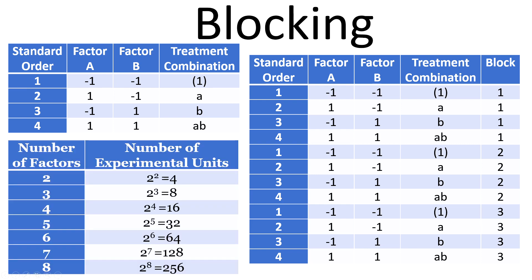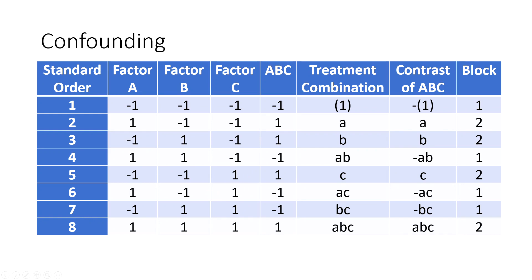When we have a long list of variables that we want to study and we won't be able to find homogeneous experimental units or from one single batch, then there should be multiple blockings. Now confounding, on the other hand—